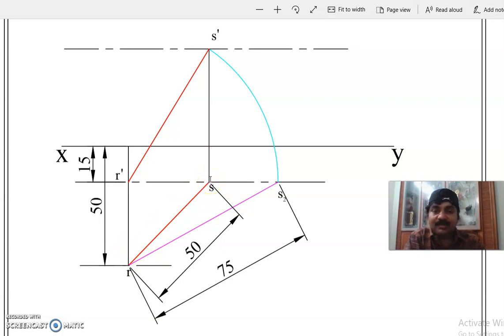Now end S is above HP. So S dash will be above XY line, that is sure. How much above we do not know. So for that we will draw RS2.